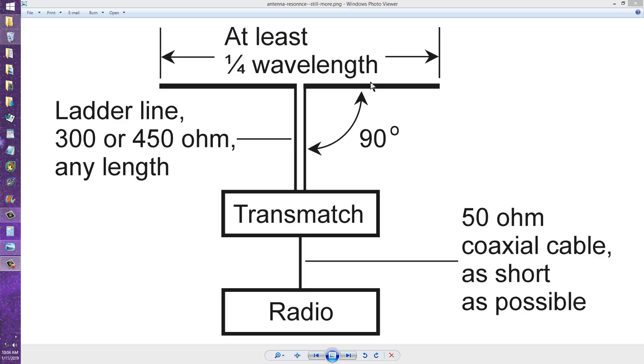There should be a 90 degree angle between the feed line and the antenna to avoid imbalance in this part of the system beyond the transmatch. This is a balanced, non-resonant system.